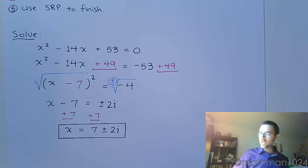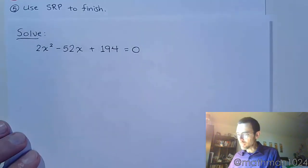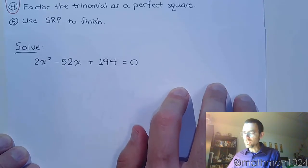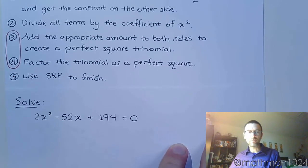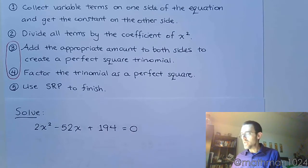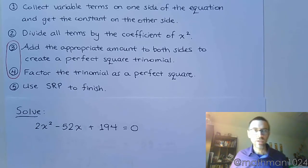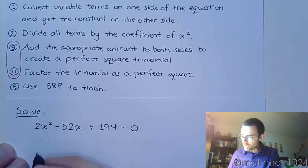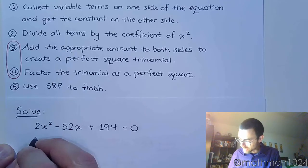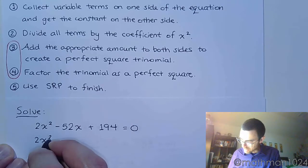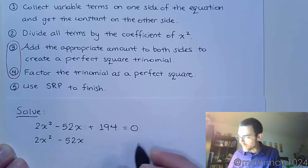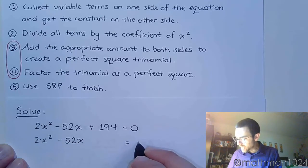Alright, so let's try another example. Let's take a look at 2x squared minus 52x plus 194 equals 0 and let's go through the same process, the same steps. So, the first step is to get the variable terms by themselves. So, we need to move the 194 to the other side. So, 2x squared minus 52x leaves some room and we end up with negative 194.